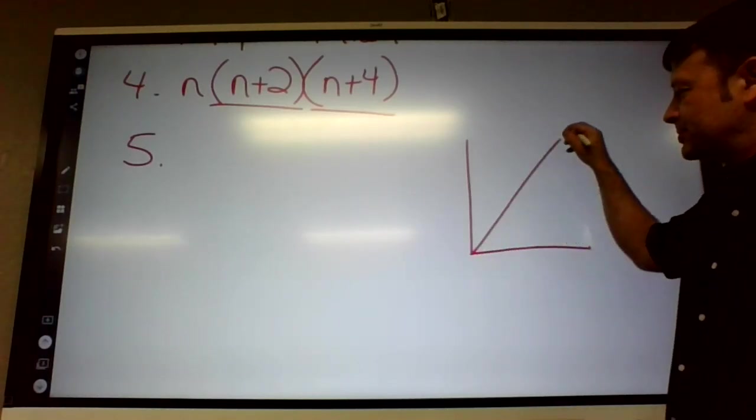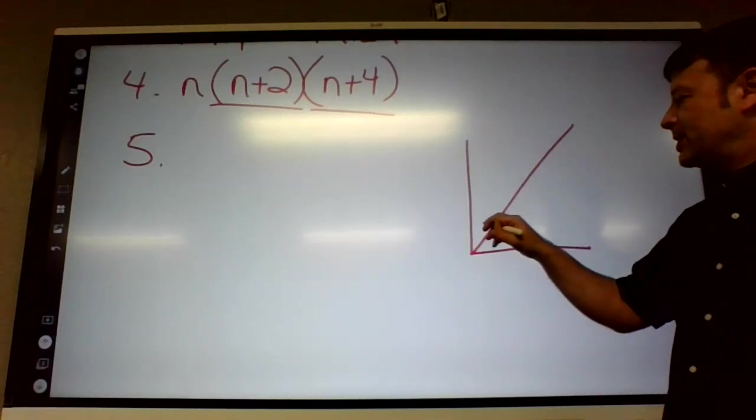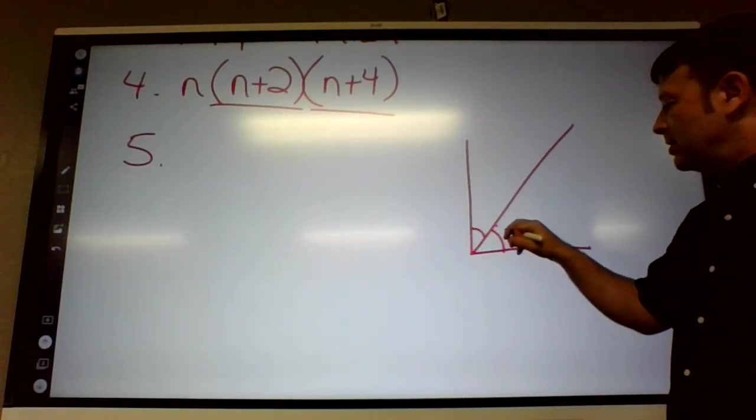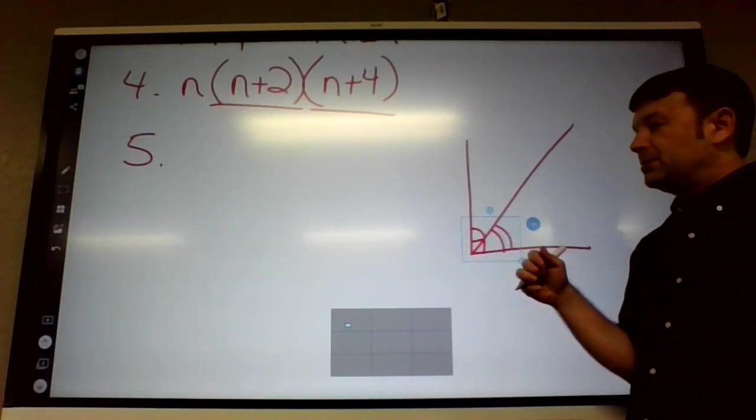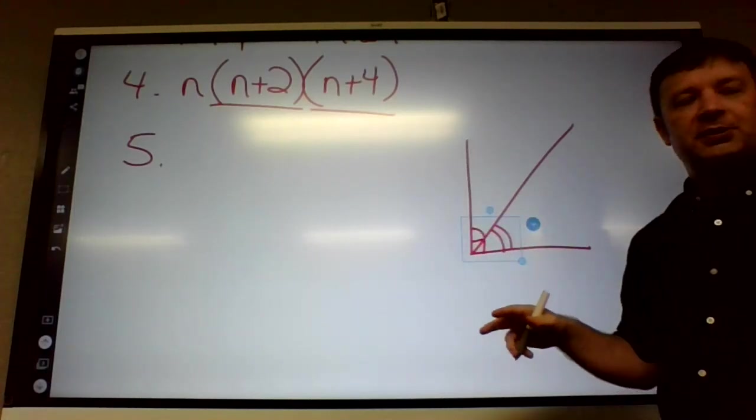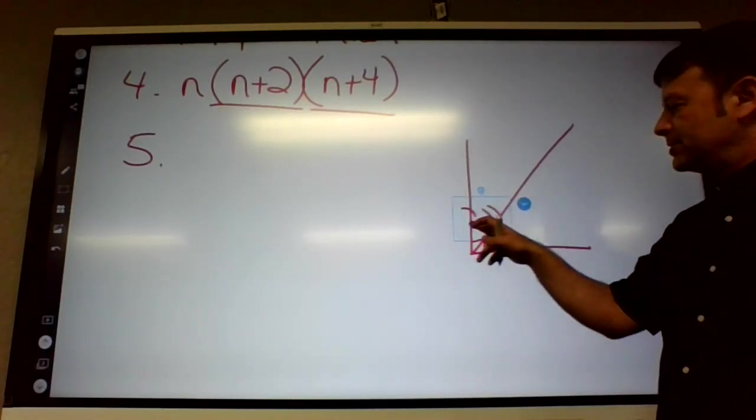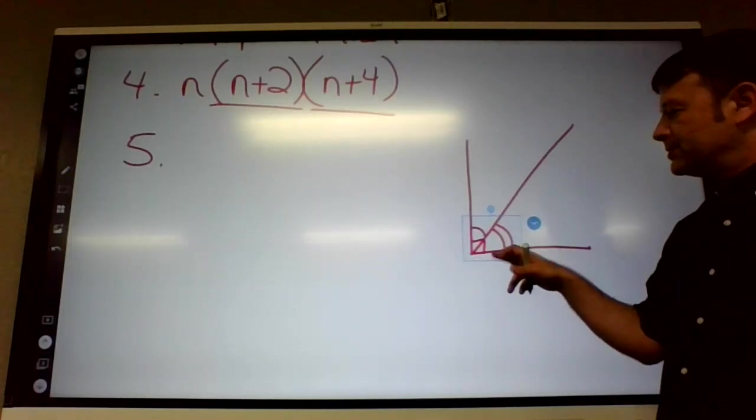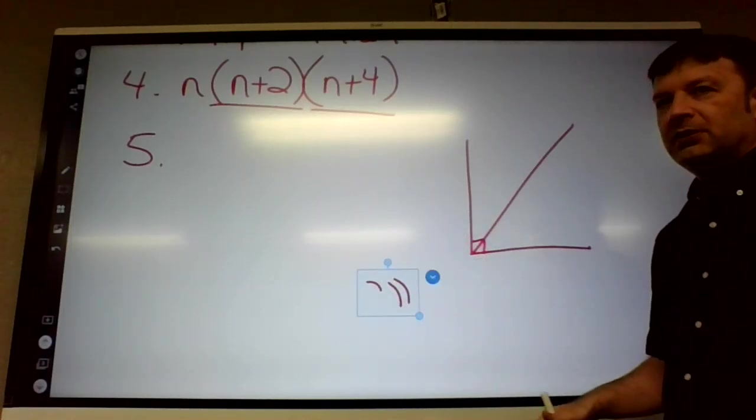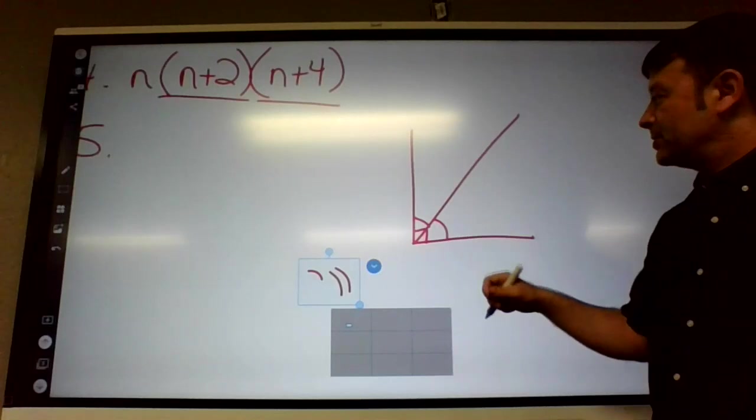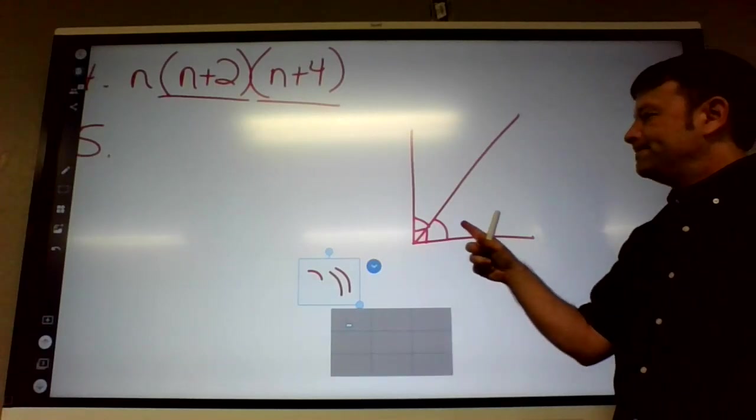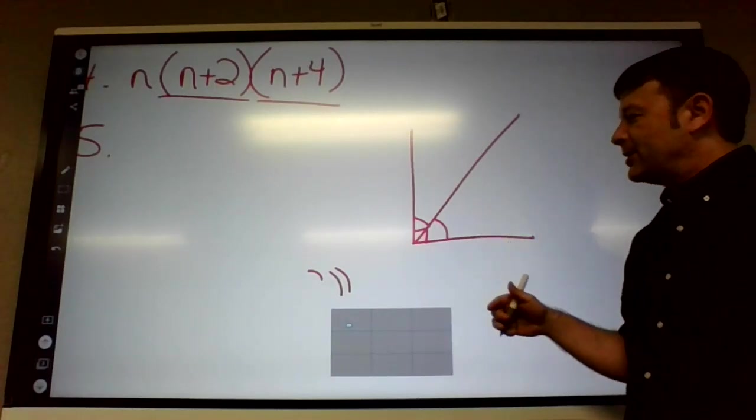Does anybody remember what complement meant? Complementary angles? They add up to 90 degrees. So in a picture, they might look like this. These are just to kind of show the two different angles, two different measurements. If you want to show they're the same, you put the same arc. Anyway, these two angles add up to 90.